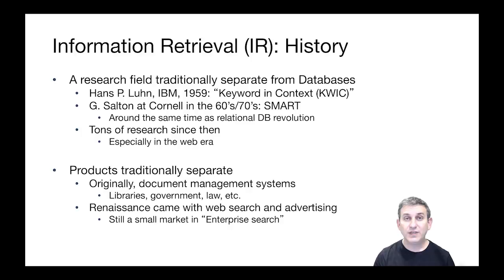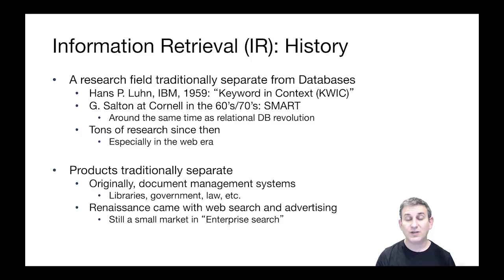Traditionally, database systems and information retrieval, or document search systems as they're sometimes called, were separate products. Document management systems were mostly targeted originally to libraries, to legal firms, and to government, which had lots of electronic documents. This all changed when the web became prevalent and advertising on the web became a source of revenue for big companies. There still is a small market of what's called enterprise search to service these older use cases, but the vast majority of what's done in text search these days is done for searching the web.